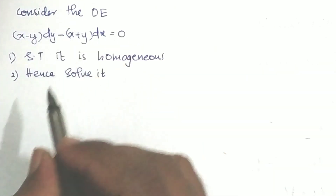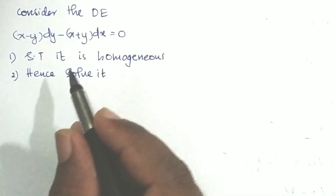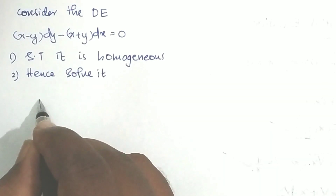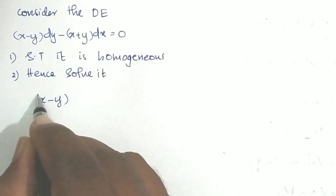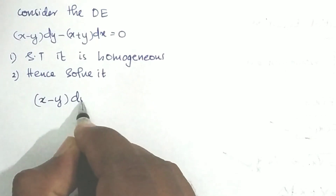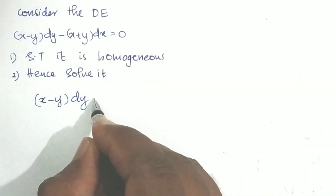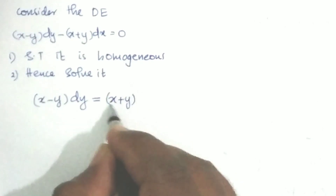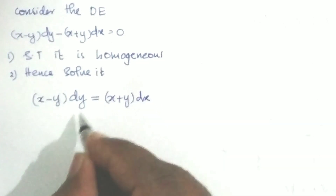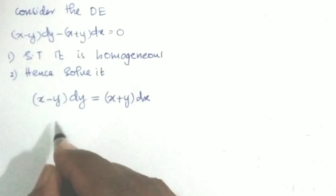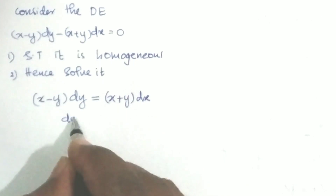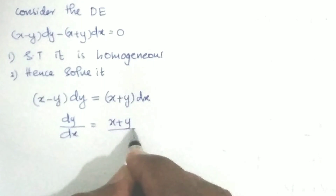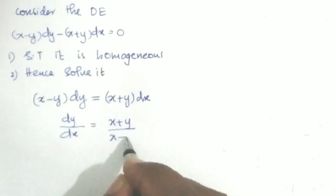To prove this is homogeneous, we rearrange it into the form dy/dx = f(x, y). From (x − y) dy = (x + y) dx, we get dy/dx = (x + y) / (x − y).